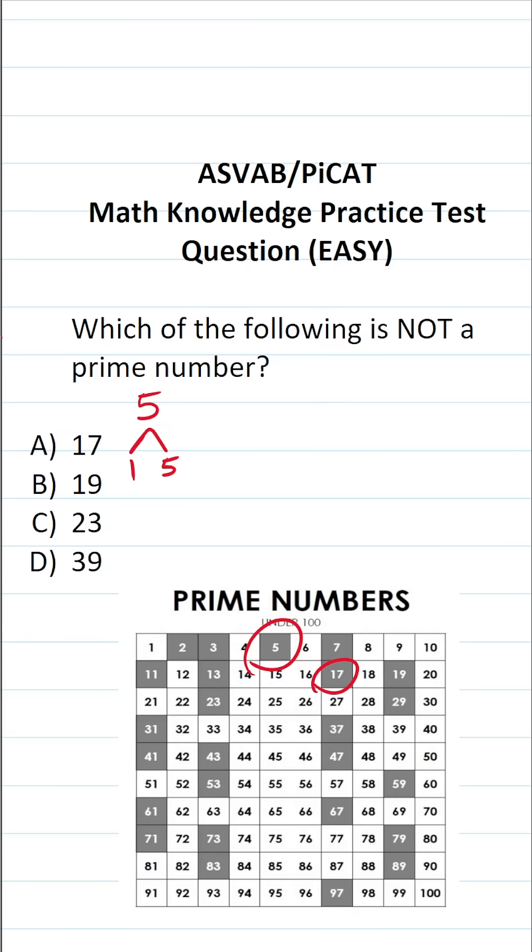17 is a prime number because its only two factors are one and 17. Likewise, 19 is a prime number because its only two factors are one and 19. 23 is a prime number because its only two factors are one and 23.